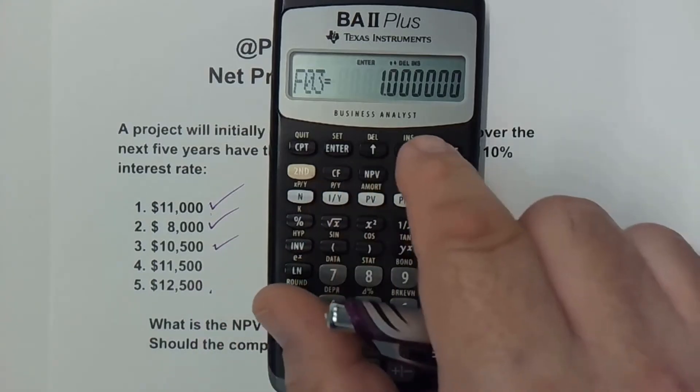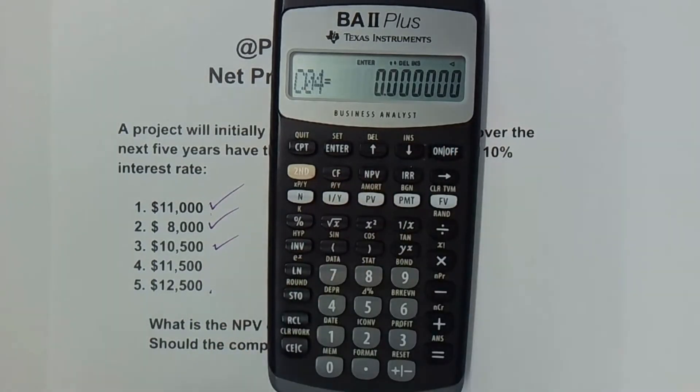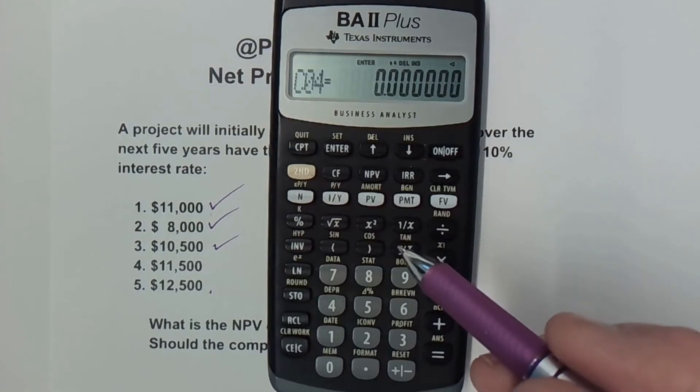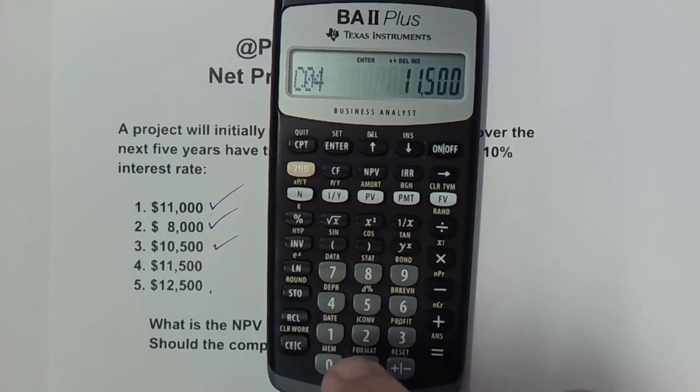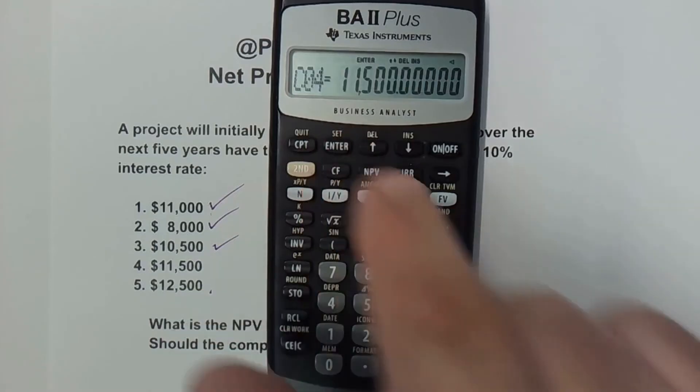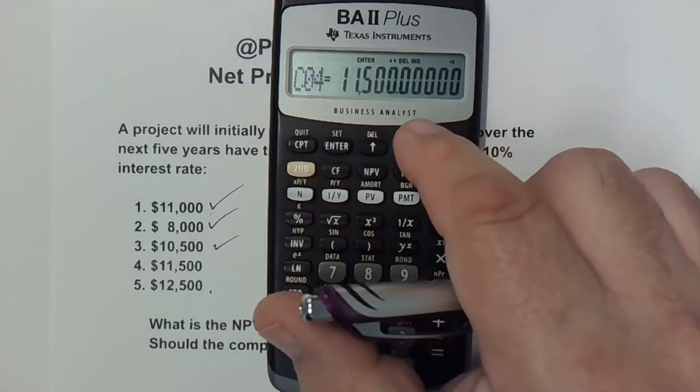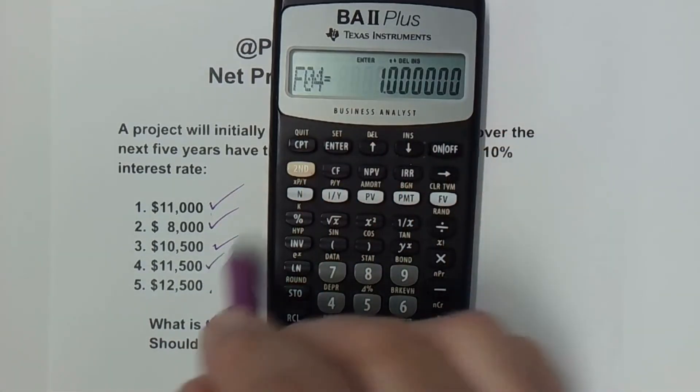Go ahead and check it off and arrow down. Cash flow 4 is going to be $11,500. Hit the enter button and arrow down. We took care of that one.